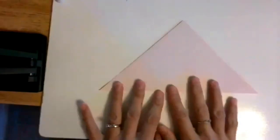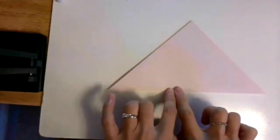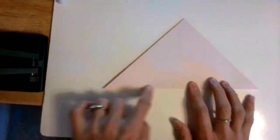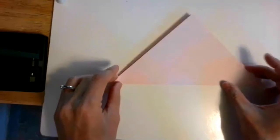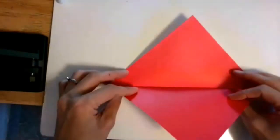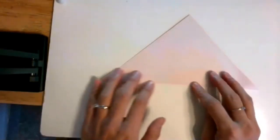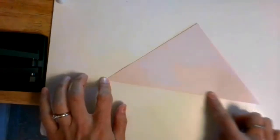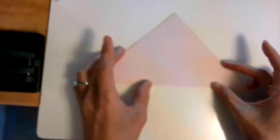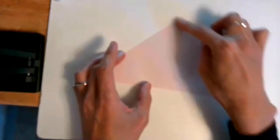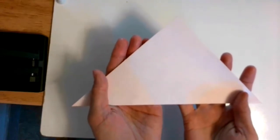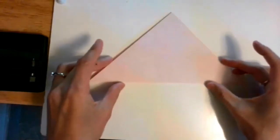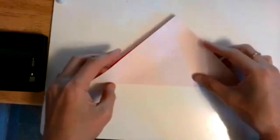You want to firmly crease it all the way. You want a nice, crisp crease each time. Keep the corners matched. It should look like a snow mountain right now.